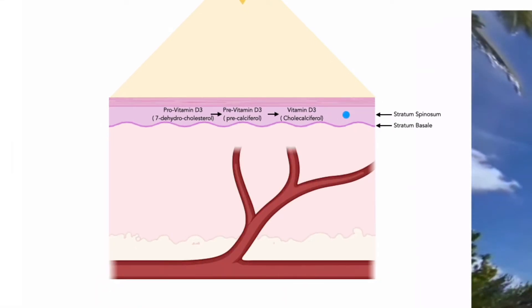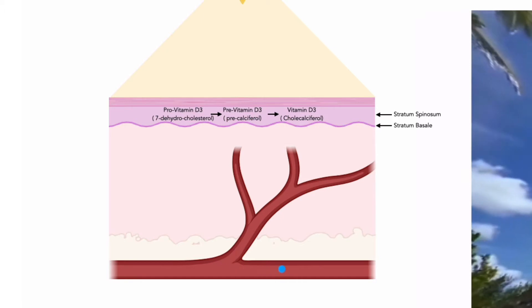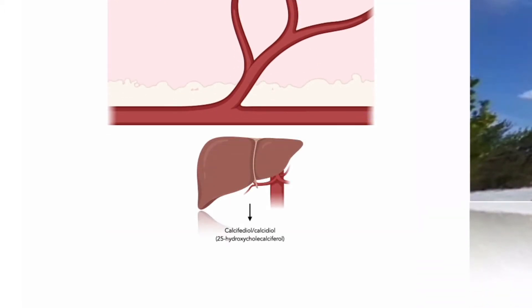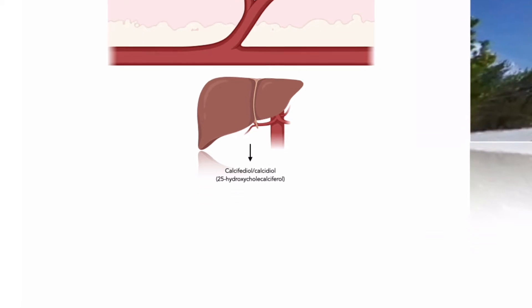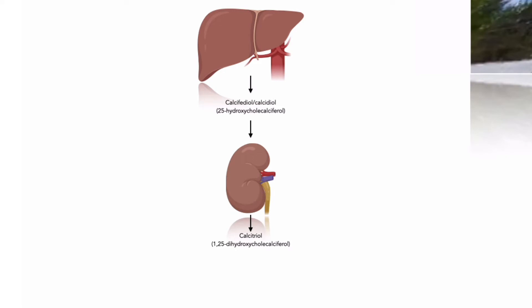Cholecalciferol is transported via blood vessels to the liver, where enzymes convert vitamin D3 into calcifidiol, or calcidiol, which is 25-hydroxycholecalciferol. From the liver, calcidiol is filtered from blood by the kidneys. Cells of the proximal tubule of the nephrons of the kidney then metabolize it into calcitriol, which is the active form of vitamin D3, also known as 1,25-dihydroxycholecalciferol.